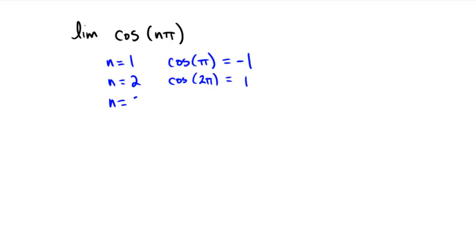Then if we did n equals 3, we would get the cosine of 3 pi, which is a complete cycle plus another half turn, which puts us back over at negative 1.